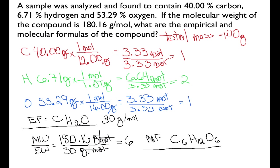Our molecular formula is C₆H₁₂O₆, and our empirical formula is CH₂O. So that's how you do it from percent data: get your empirical formula first, compare the molecular and empirical weights, and then you can get your molecular formula. Thank you very much. I hope that was helpful. Thanks for watching.